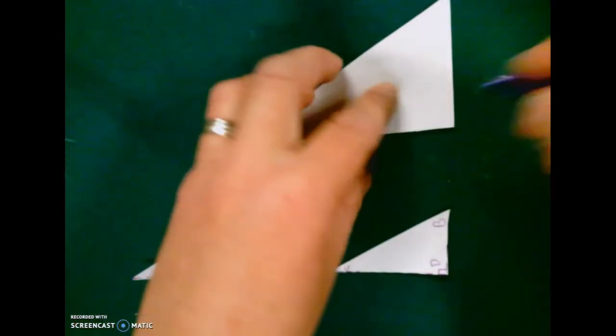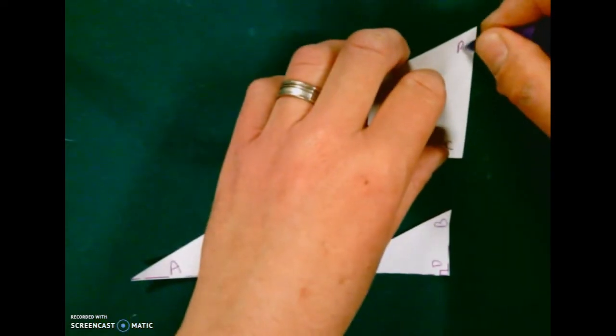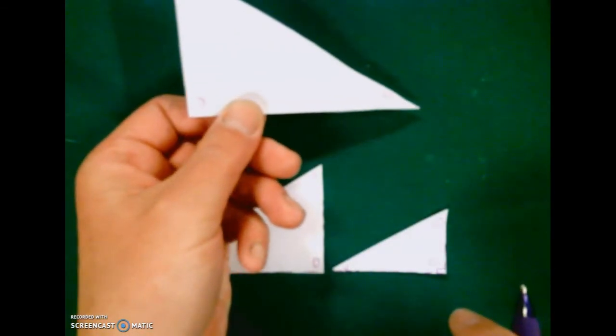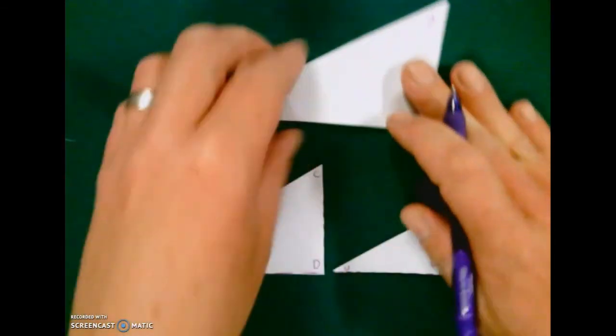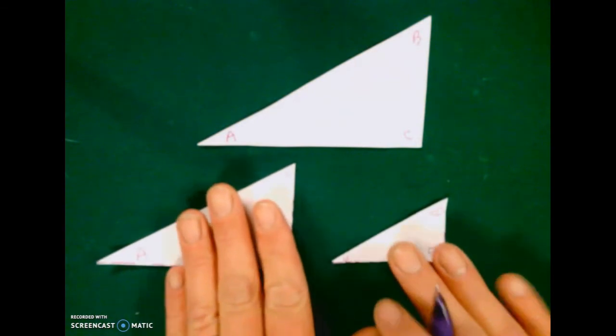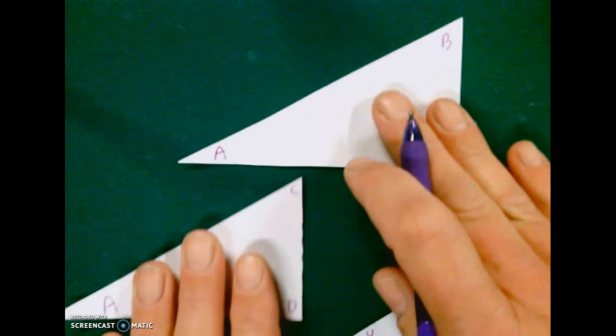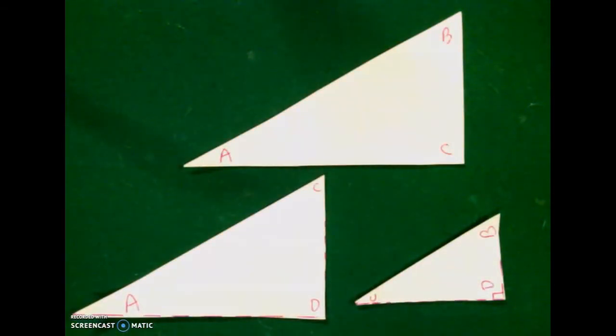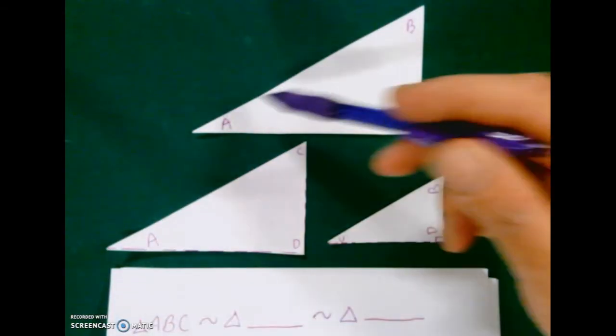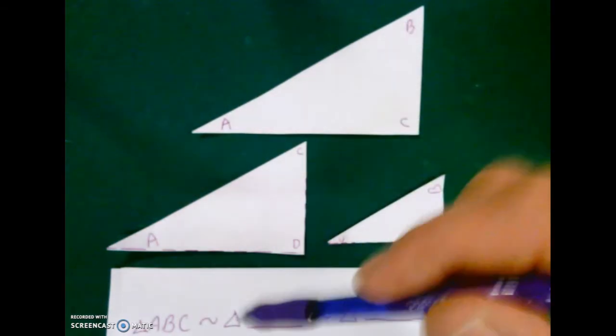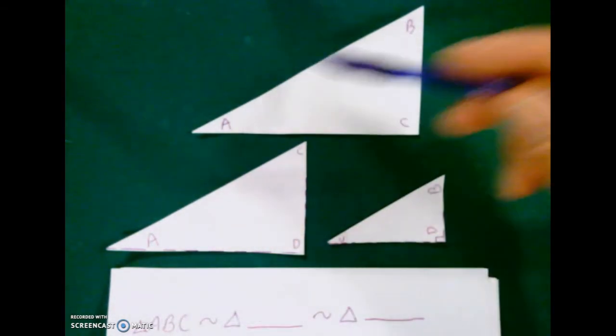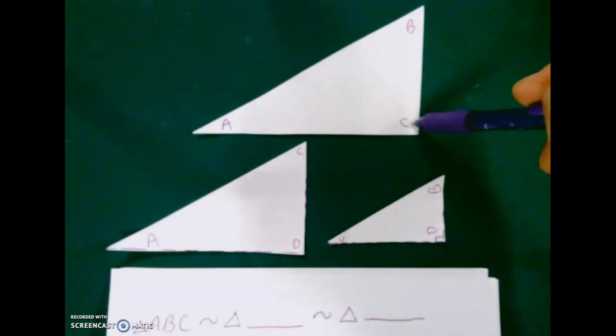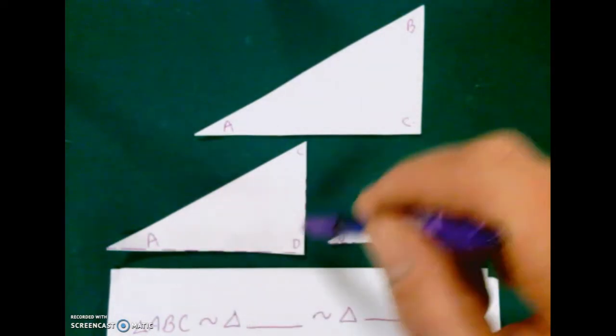The right angle is C, so it's C over here. The top angle is B. It's the same triangle as before, just flipped. Now we have them all the same and can compare them. Here's the statement: starting with the big triangle ABC—that makes sense. Then it would go ACD—first, then the top, then the right angle.